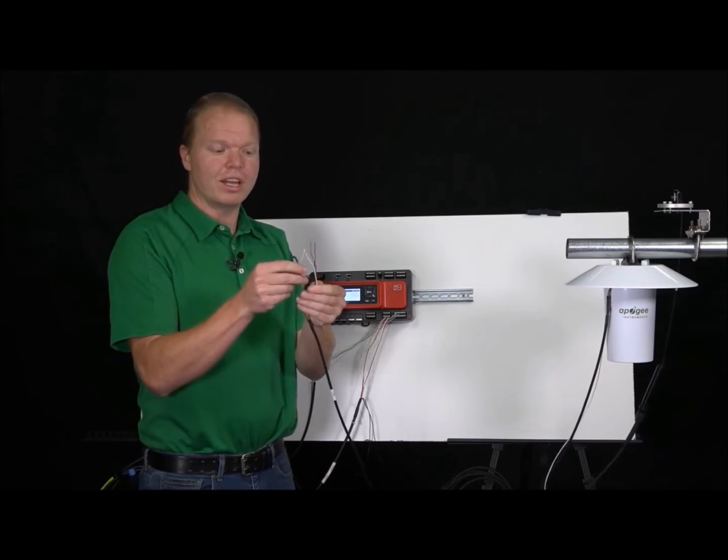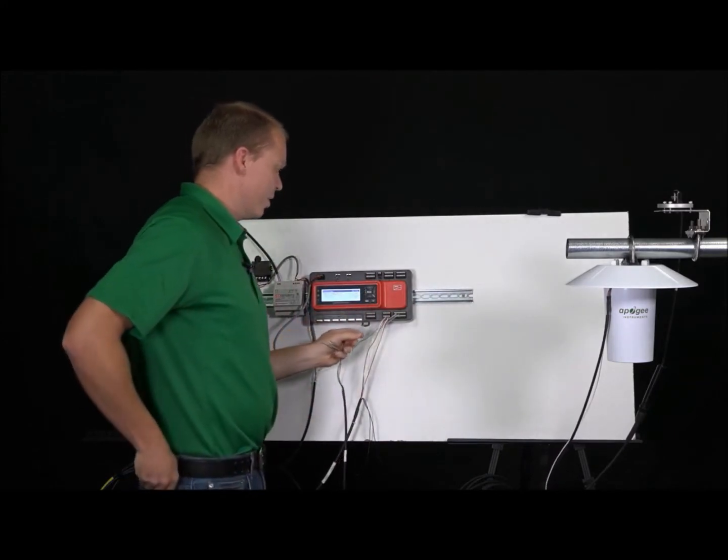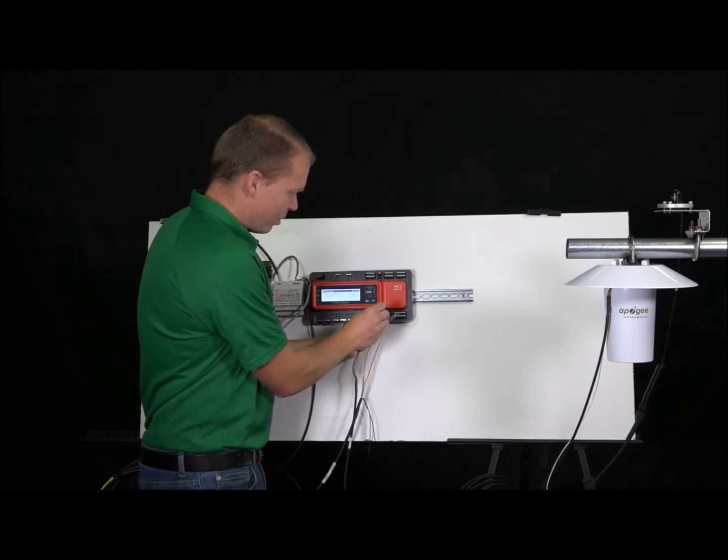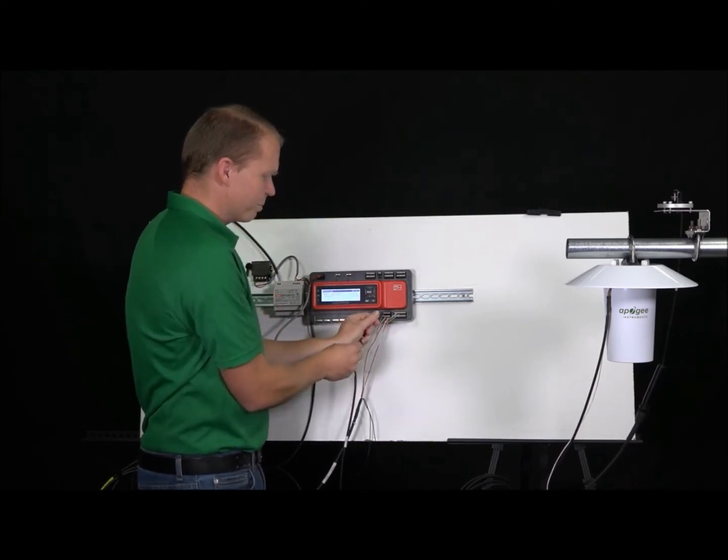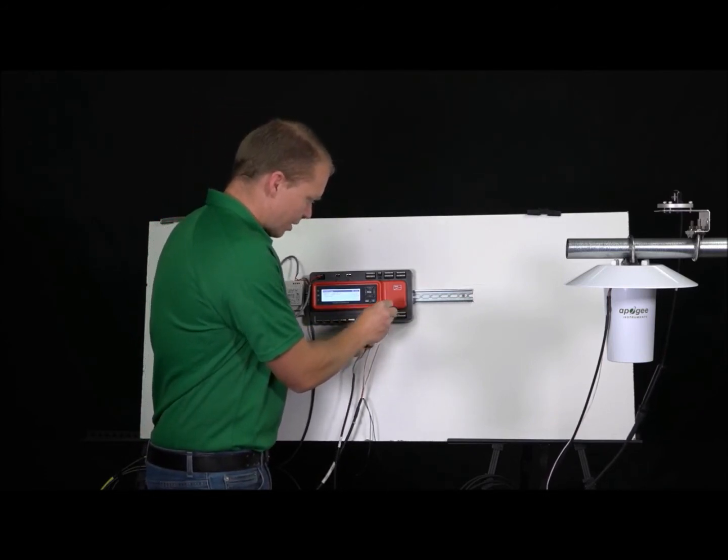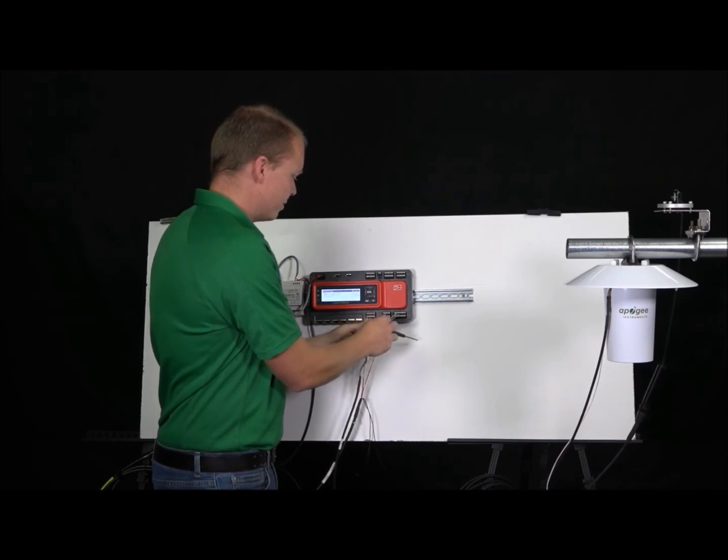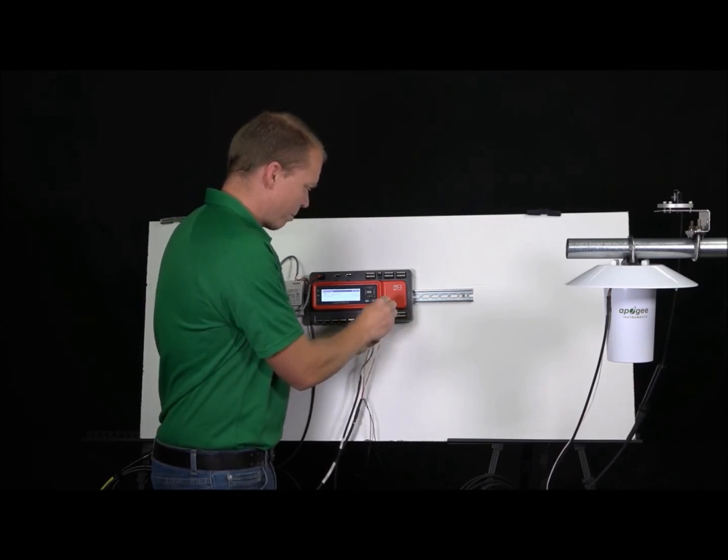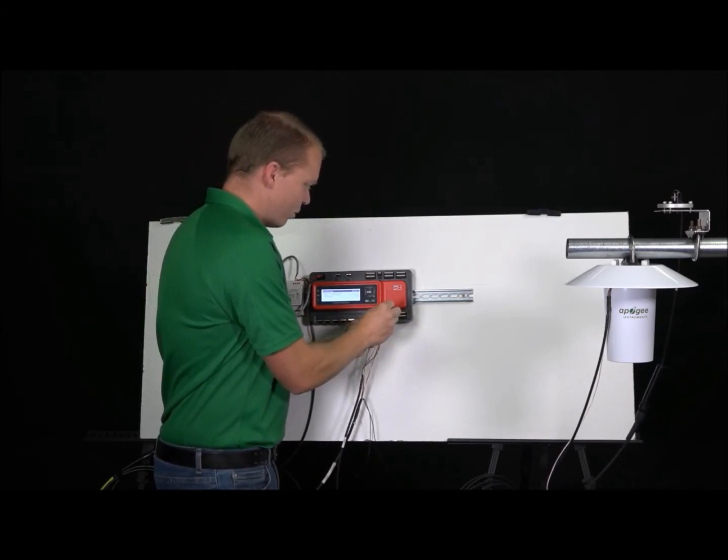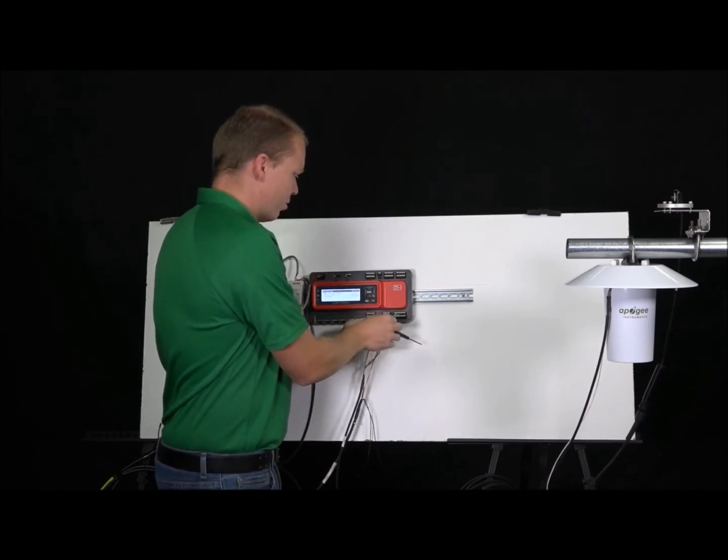So this one comes with five conductors. It comes with a shield, a red, a black, a green and a white. And we'll just be using all five of these conductors. So we're now on X7 row A. We're going to start right here. And we're going to put the shield in first, in the first terminal. The second one is going to be the white conductor. Then the next one is going to be the black conductor. Then we have the green conductor into the fourth terminal there. And then we have the red conductor.